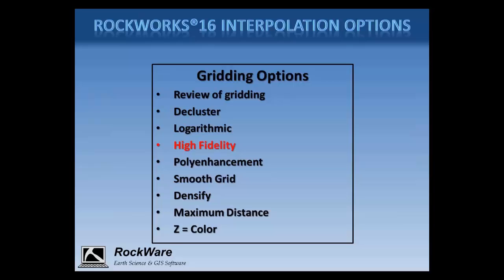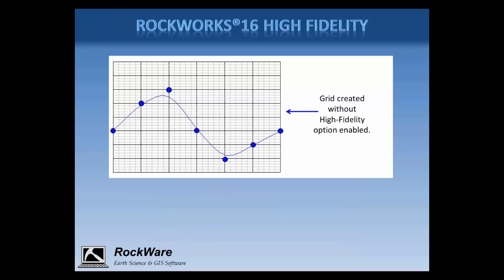Next on the list is the high fidelity option, also available for both gridding and 3D solid modeling. When enabled, this option tweaks the final grid so that it will better honor your data. As an example, assume this diagram shows a cross-sectional display of measured elevation values as blue circles. The blue line represents a grid created from these elevations using Kriging or inverse distance — the grid comes close but doesn't honor the data exactly. A discrepancy between measured and modeled values can be caused by a number of factors, often related to the interpolation algorithm — for example, using many points to estimate each grid cell can create an averaging effect at highs and lows.